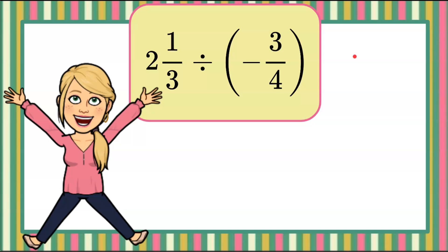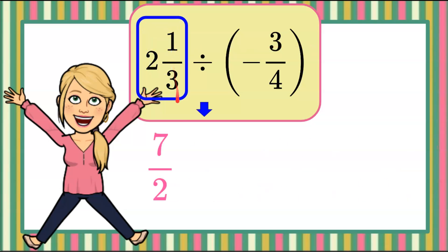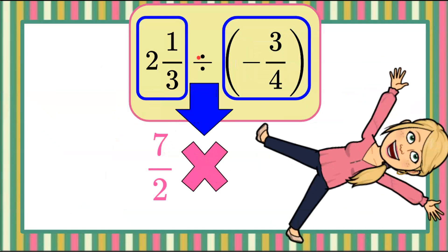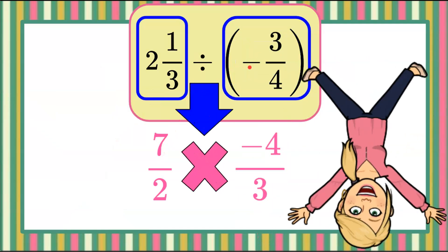Welcome to The Magic of Math. Today we're dividing rational numbers in fraction form. We're going to use our rule where we keep our first fraction the same as an improper fraction, change divide to multiply, and multiply by the reciprocal — which means we are flipping the numerator and denominator and keeping that sign.